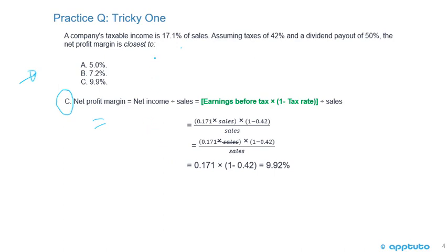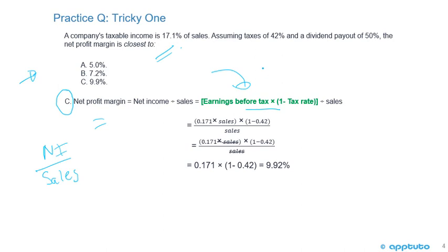We're looking for the net profit margin, forecasting it based on data they've given us. The net profit margin is net income divided by sales. Net income can also be written as earnings before tax times one minus the tax rate, which gives us our net income. We did see that before on the LOS for the DuPont analysis.